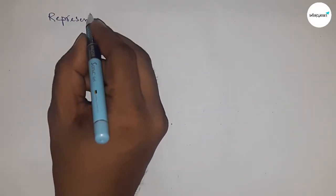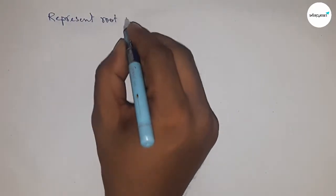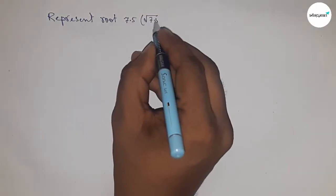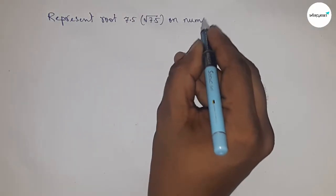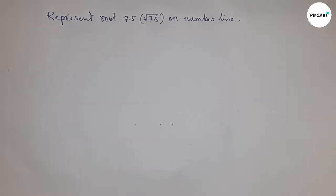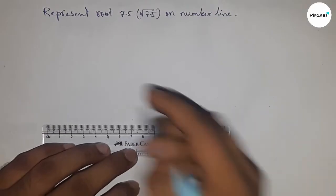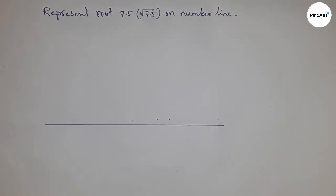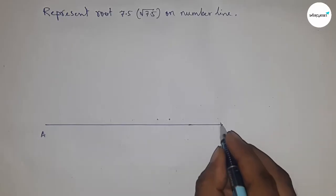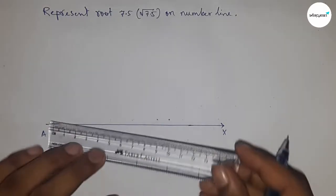Hi everyone, welcome to SSR classes. Today we're talking about how to represent root 7.5 on a number line. So let's start. First of all, drawing a line AX. Next, taking the length 7.5 centimeters.